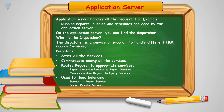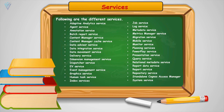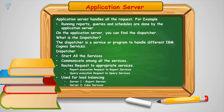Dispatcher is responsible for starting all these services, communicating among all these services, and routes the appropriate request to the appropriate service. For example, if I want to run a report, then dispatcher is going to forward this request to the report services. Similarly, if I want to run a query, then dispatcher is going to route this request to the query services. Dispatcher is also responsible for getting the response and sending it back to the web server.